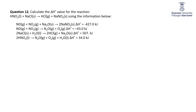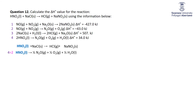One more example — this time with four equations. Label them 1, 2, 3, 4. The target equation involves HNO₂ and NaCl. First, I need HNO₂ on the left: equation 4 has two HNO₂, so I take equation 4 and halve it. Next, I need NaCl on the left: equation 3 has it, but again I need to halve it. That also conveniently gives HCl on the right.